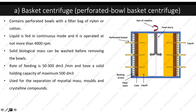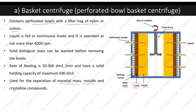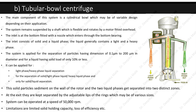The basket centrifuge or perforated bowl basket centrifuge contains perforated bowls with a filter bag of nylon or cotton. The perforated basket is lined with a backing screen on which filter cloth is placed. Slurry is fed continuously from the center and the centrifuge runs at no more than 4000 rpm. The filter cake deposits along the filter cloth and clear liquid passes out through the perforated holes. Feed rate is 50 to 300 dm³/min with a solid holding capacity of maximum 500 dm³. It is used for separation of mycelial mass, molds, and crystalline compounds.